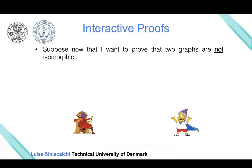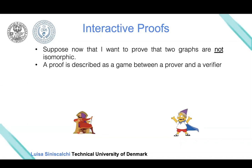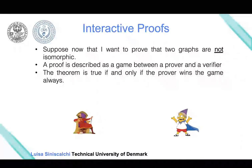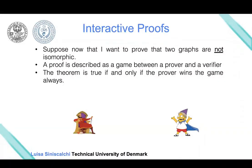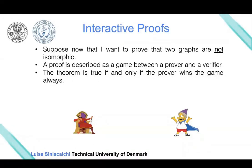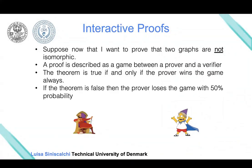From this interactive proof we could require two properties. The first says that if the theorem is true—in the case the graphs are not isomorphic—then the verifier will believe the prover with probability one. If the statement is true, the verifier will always accept this proof.